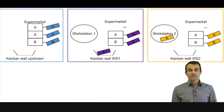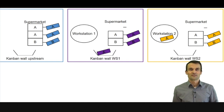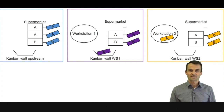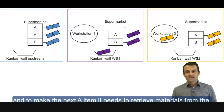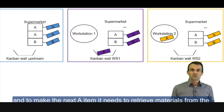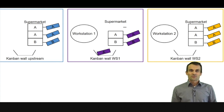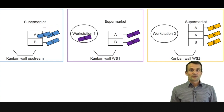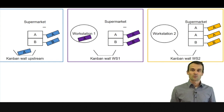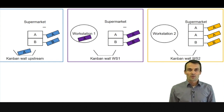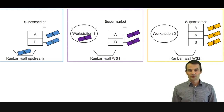Then at workstation 1, the same happens all over again. Workstation 1 observes that it has a new Kanban card on its wall, so it is allowed to produce the next A item. To make the next A item, it needs to retrieve materials from the upstream stage, where the item will be taken and the corresponding Kanban card will move to the upstream Kanban wall — and so on, all the way up to the start of the production line.